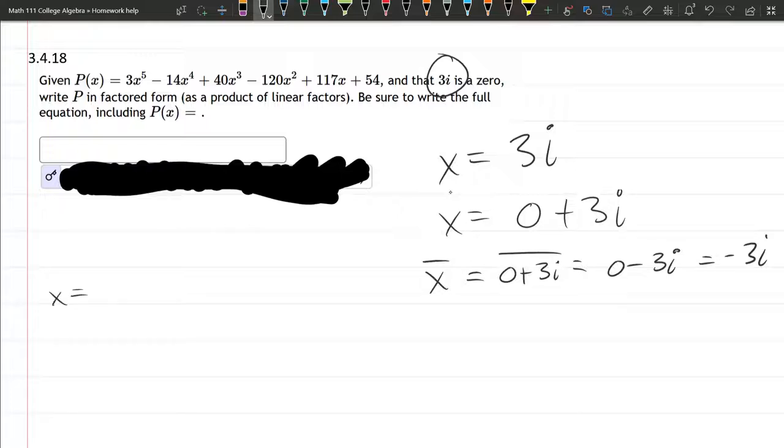All right, let's go ahead and write these out. We have x equals 3i is a zero, and the factor would be x minus 3i. And for x equals negative 3i, the factor that corresponds to is x plus 3i.